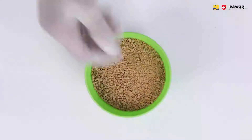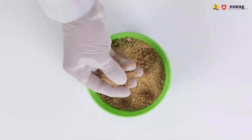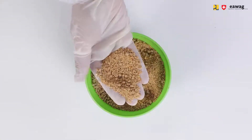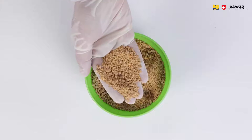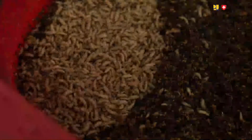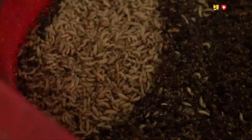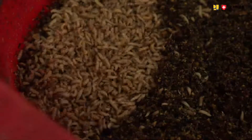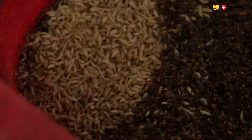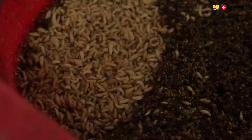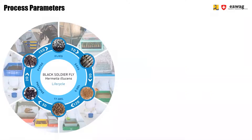We use chicken feed as a substrate because it has a protein content of around 23%, which gives this boost to the larval growth. Another important reason why we use chicken feed is to be able to predict larval growth over a certain amount of time, which always remains constant because the substrate always has the same nutrient content as with chicken feed.